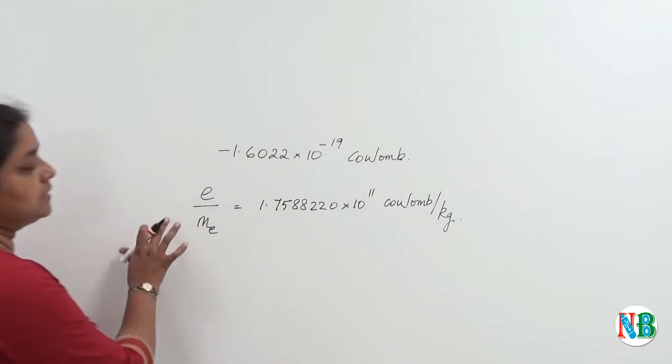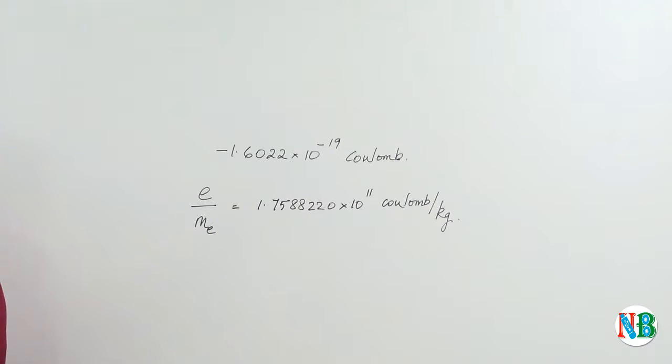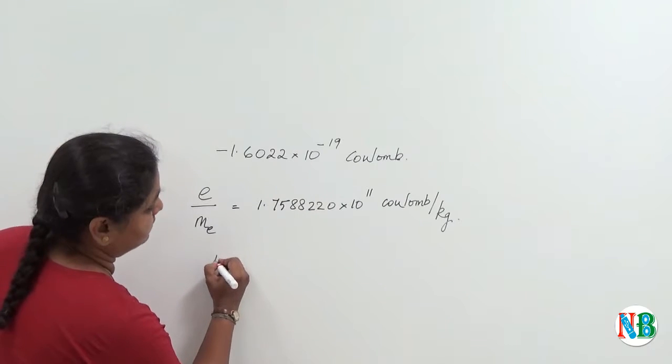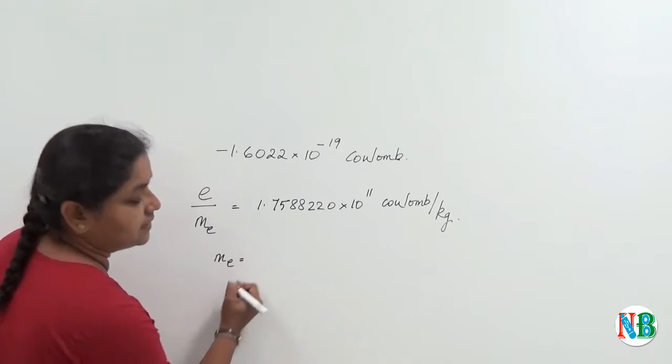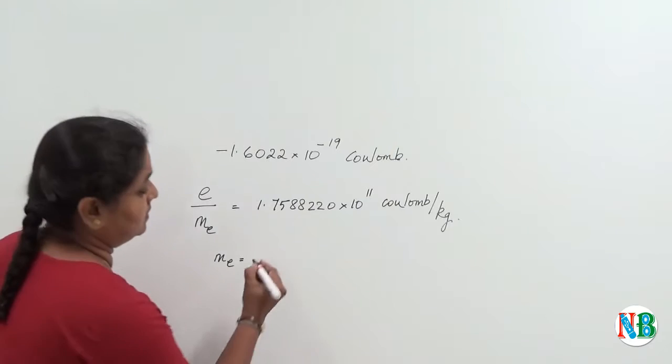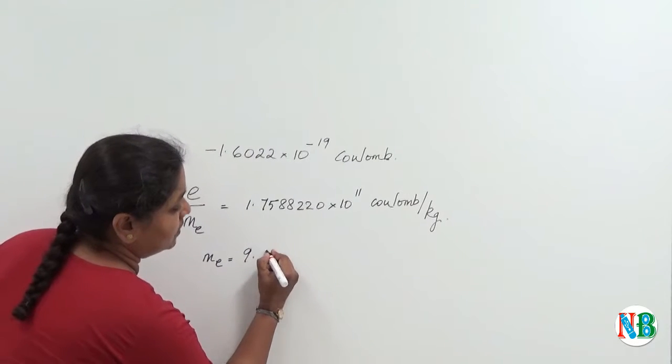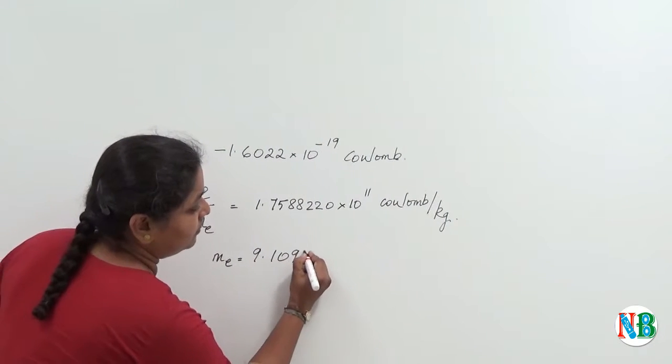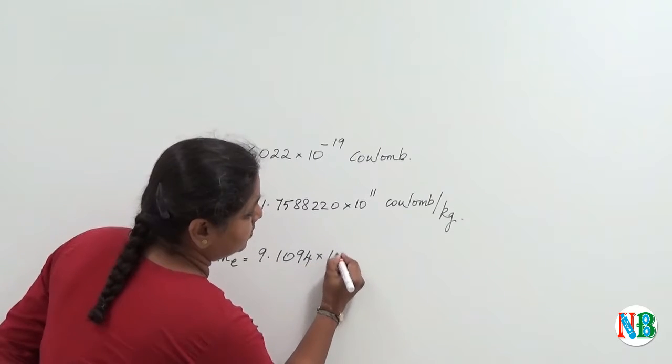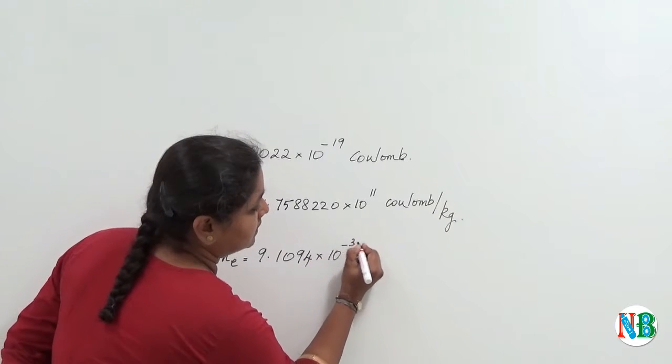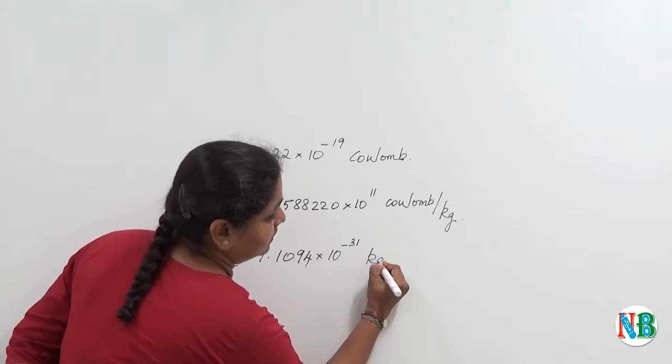Using this formula, we came to the calculation that mass of an electron, M.E., is equal to 9.1094 into 10 to the power of minus 31 kg.